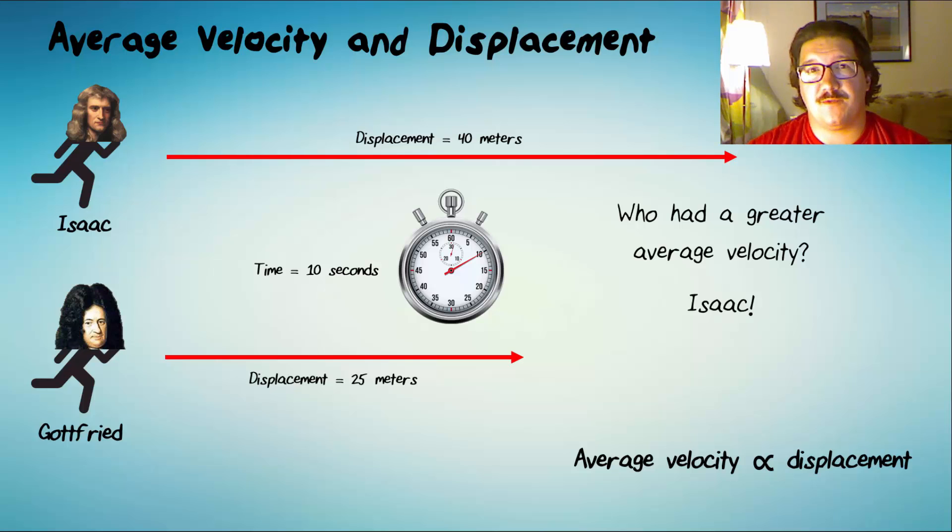We would say that average velocity is proportional to displacement. Take a moment and carefully draw that symbol there. We're going to use that a lot this year to represent proportional to. And we would say that this is a direct relationship. The more displacement you have, all things being equal, the faster you're moving.